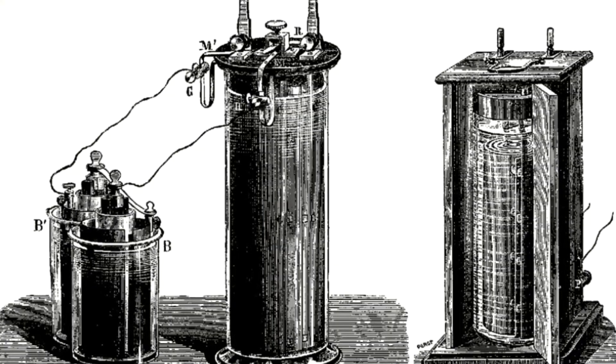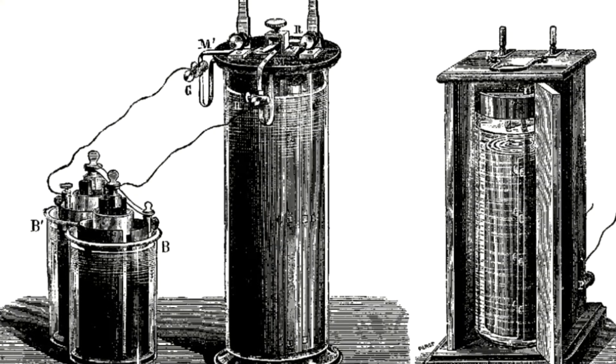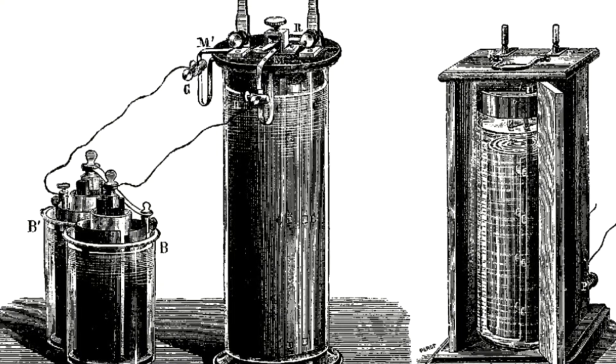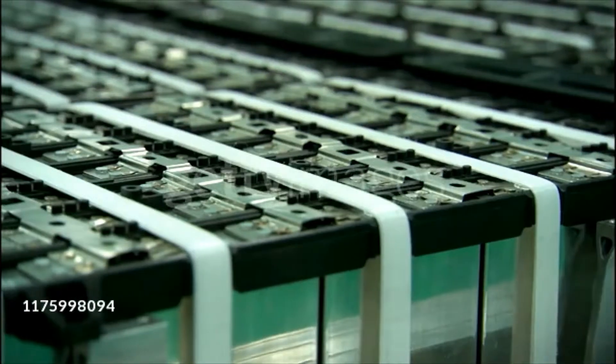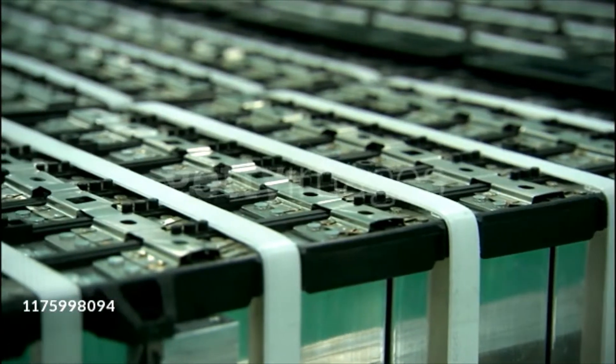His batteries were made with copper and zinc discs and were parted by clothing soaked in salt water. Electricity was conducted into the wires connected to both discs through a stable current.